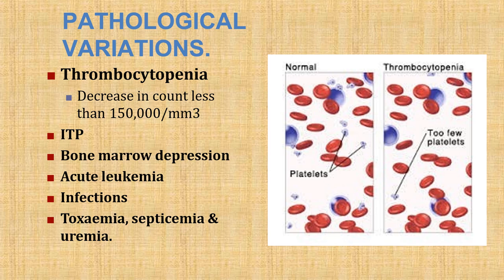Thrombocytopenia is a condition when the count decreases to less than 1.5 lakhs per mm³. This is seen in hereditary thrombocytopenias like Fanconi's anemia, Alport syndrome, ITP (idiopathic thrombocytopenic purpura), hypersplenism (splenomegaly), HIV infections, aplastic anemia, bone marrow depression, acute leukemia, infections, toxemia, septicemia, uremia, massive transfusion of stored blood, chemotherapy, and irradiation of bone marrow.